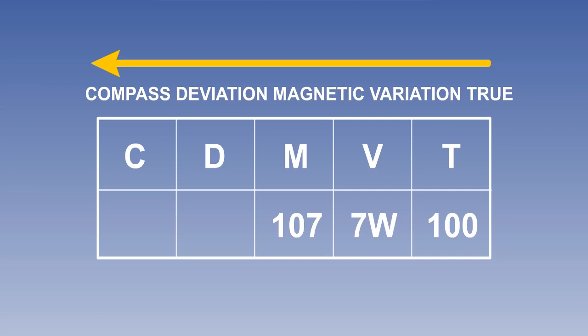We will use a deviation of 2 degrees east. East is least, so the 107 degrees magnetic becomes 2 degrees less, 105 degrees compass heading.